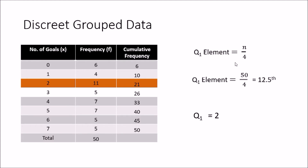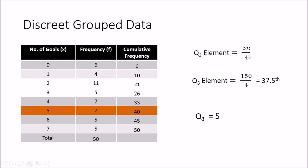Now we look at the discrete grouped data set with 50 football matches. We have a cumulative frequency table. To find the Q1 element: n/4 = 50/4 = 12.5. In the cumulative frequency table, up to one group we have 10 elements and up to the next we have 21 elements, so the 12.5th element falls in that group, giving Q1 = 2. For Q3, the Q3 element is 3n/4 = 150/4 = 37.5. With cumulative frequencies of 33 and 40, the 37.5th element falls between them, giving Q3 = 5.